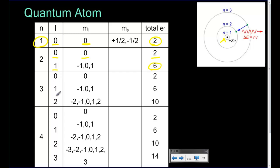L is always zero to one less than the energy level. The orbitals range from negative whatever the subshell value is to positive — so if L is one, the orbitals are negative one, zero, one; if L is two, they're negative two, negative one, zero, one, two. So one orbital gives two electrons, three orbitals give six electrons, and five orbitals give ten electrons.